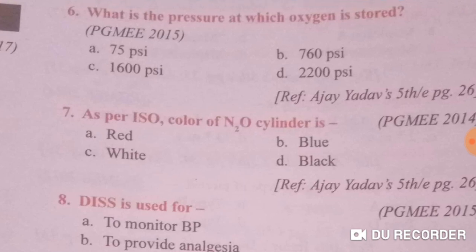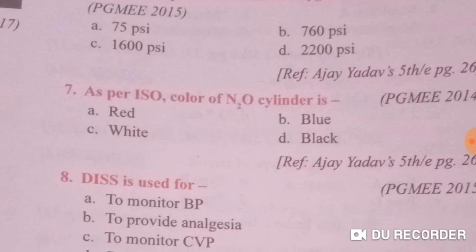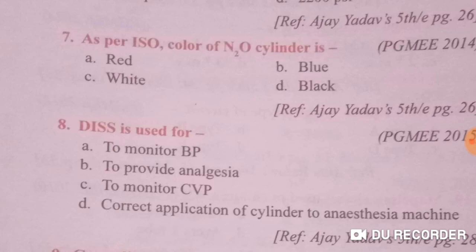What is the pressure at which oxygen is stored? Oxygen is stored at 2200 PSI. As per ISO, the color of the nitrous oxide cylinder is blue body — so option B is the answer.